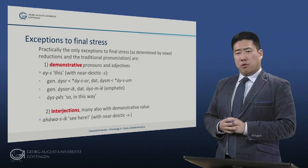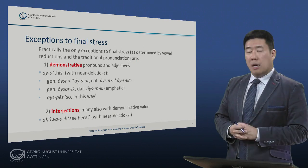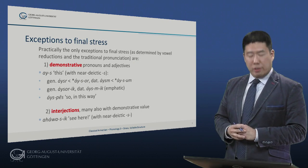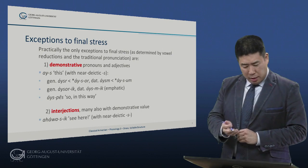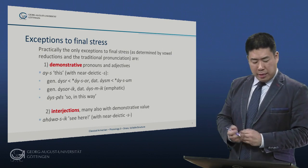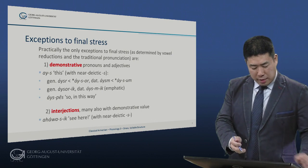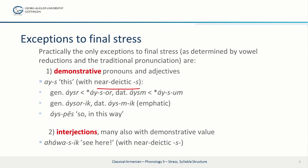There are some exceptions to final stress in classical Armenian, as determined by vowel reductions and the traditional pronunciation, as in modern Armenian. Two important categories: demonstrative pronouns and adjectives. The example of ice (with near-deictic s) — the same would apply to eyed or ein, meaning 'that' or 'that over there.' Ice inflects as follows: genitive eiser, dative eisum, where the vowel reduction only makes sense if those vowels were not stressed.